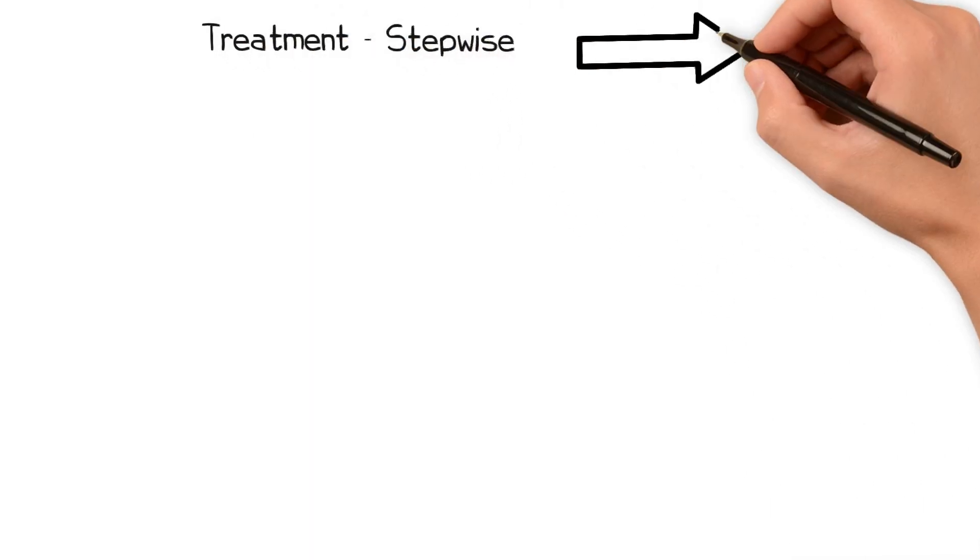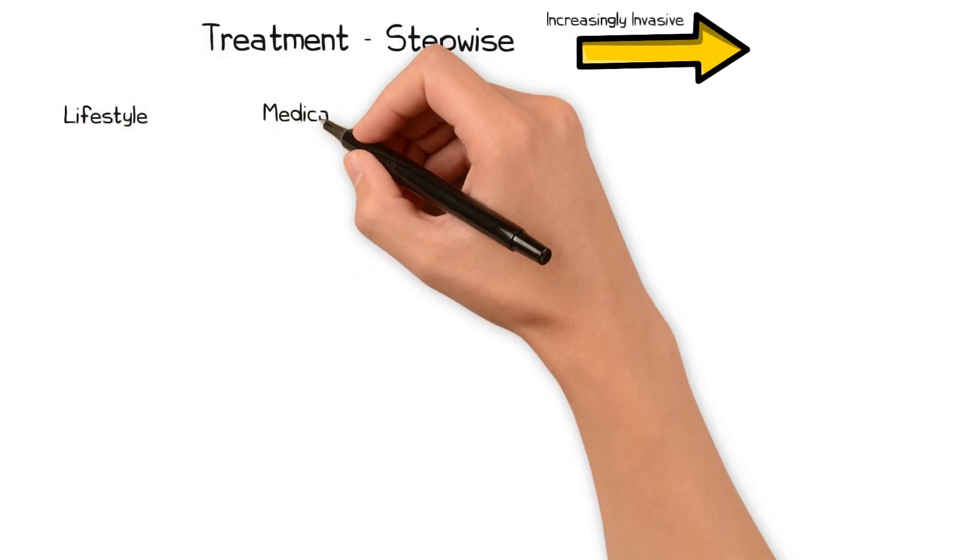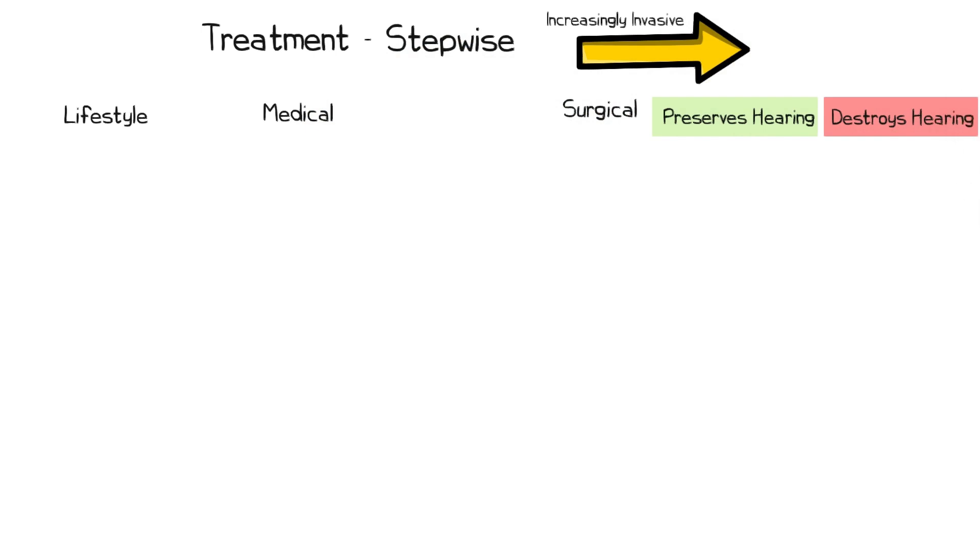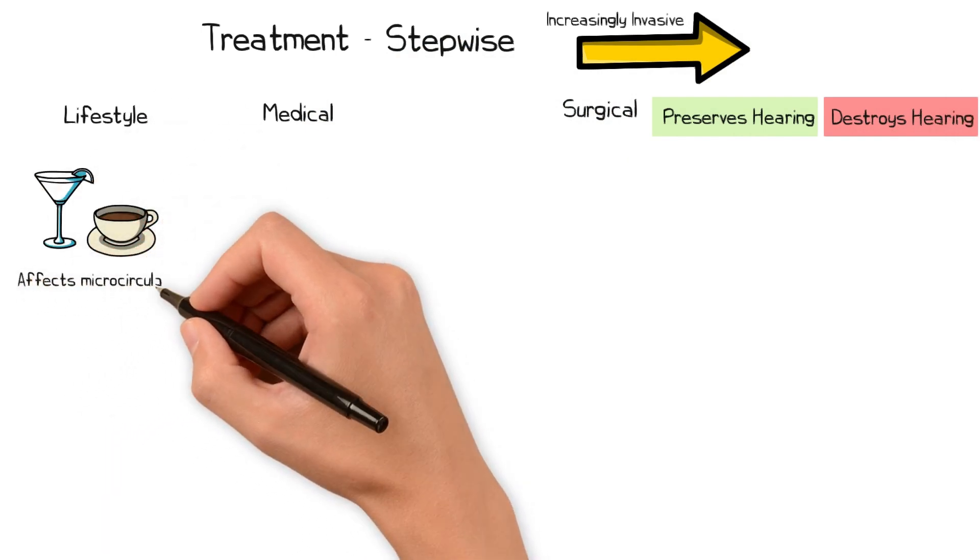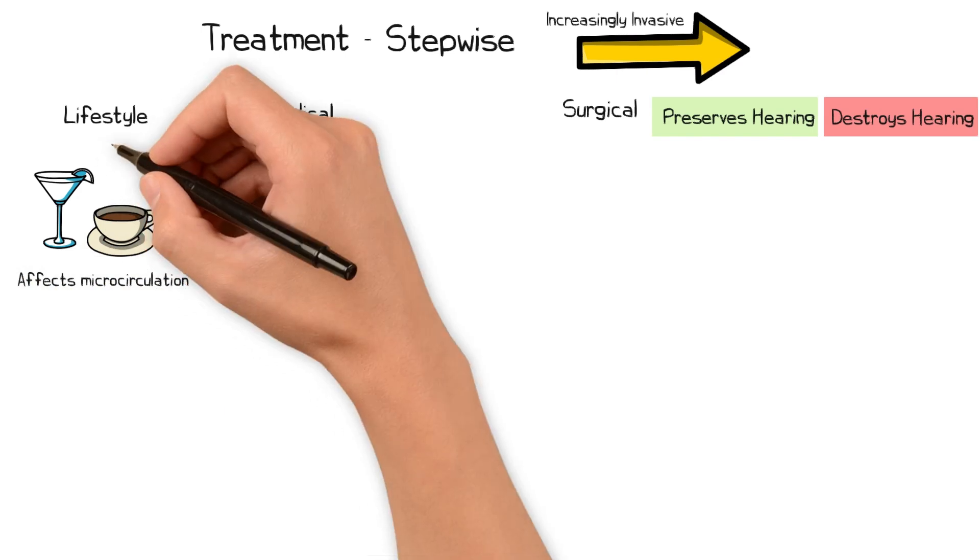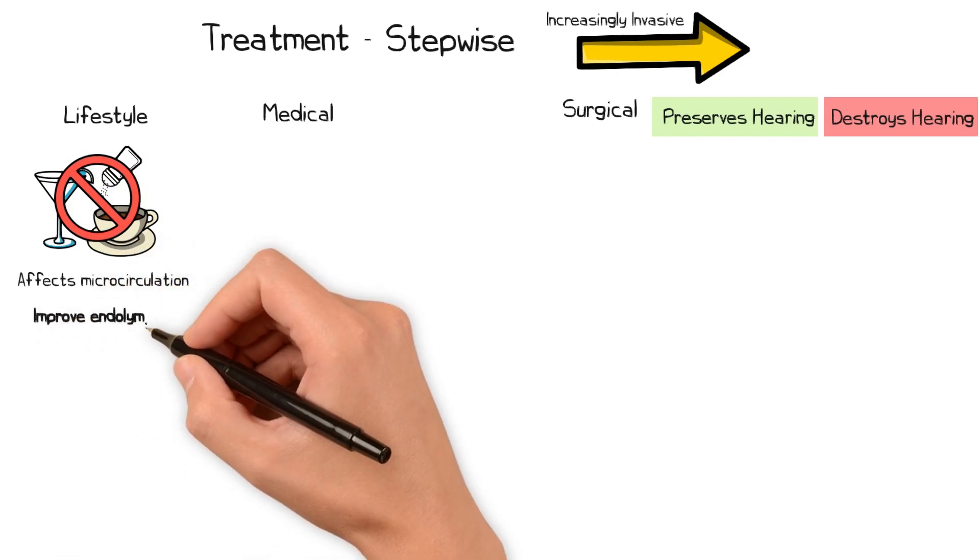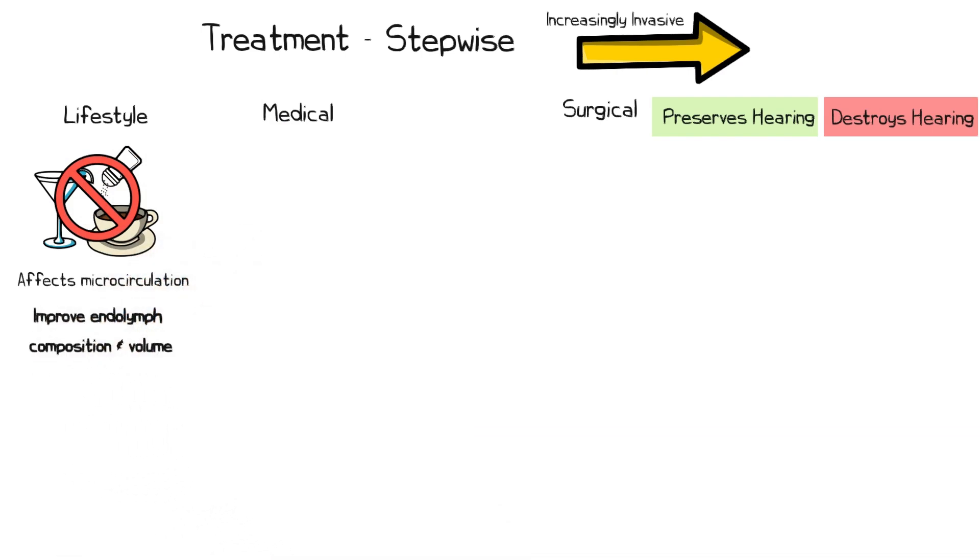The treatment is stepwise and includes lifestyle measures, medical treatments, or surgery, which can either preserve or destroy hearing. Alcohol and caffeine can result in changes to inner ear microcirculation, and so avoiding these is recommended. Similarly, salt restriction is also theorised to improve control of the volume and composition of endolymph.